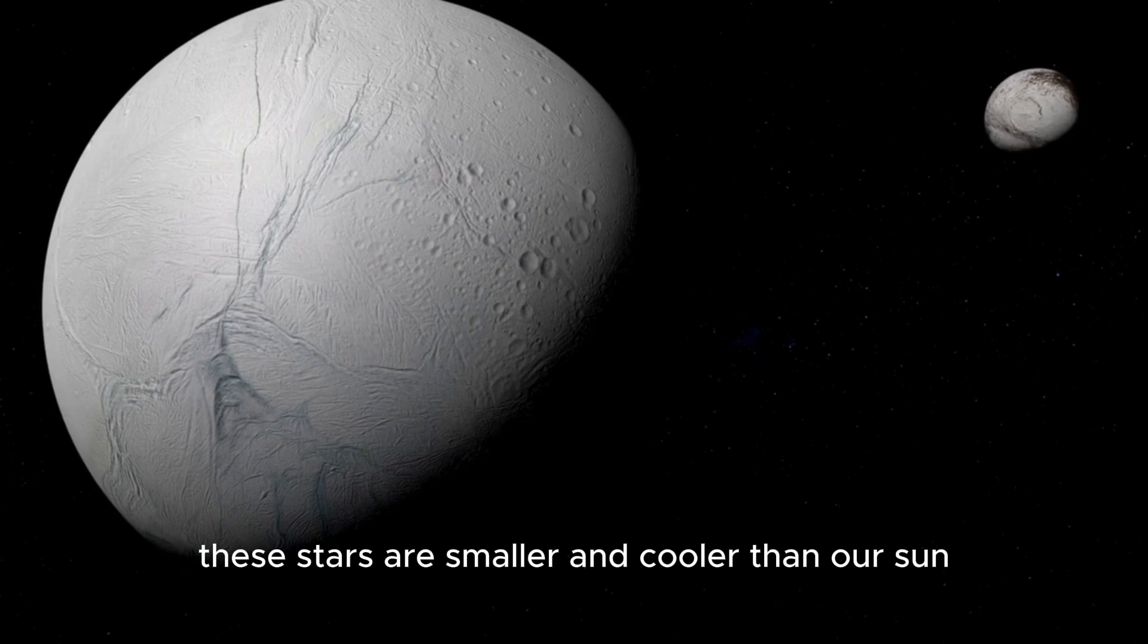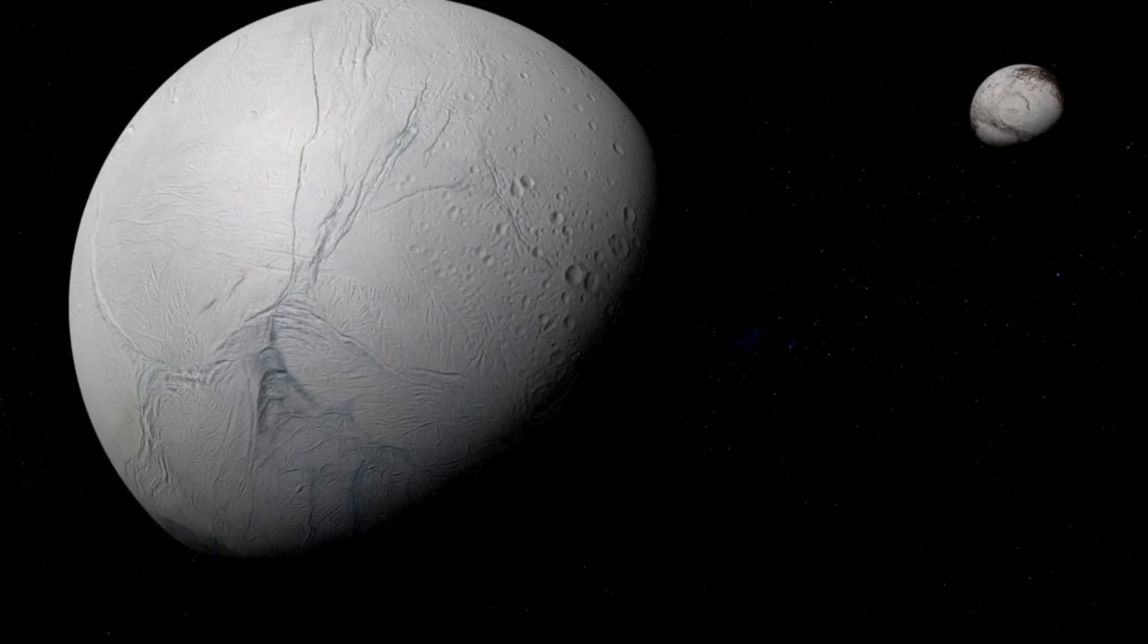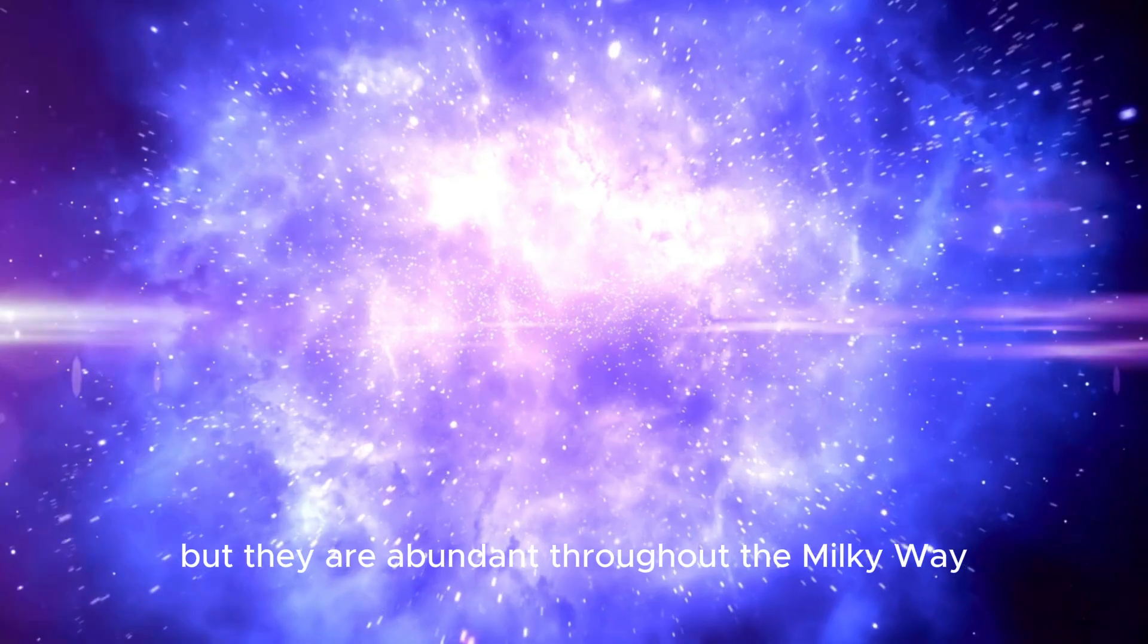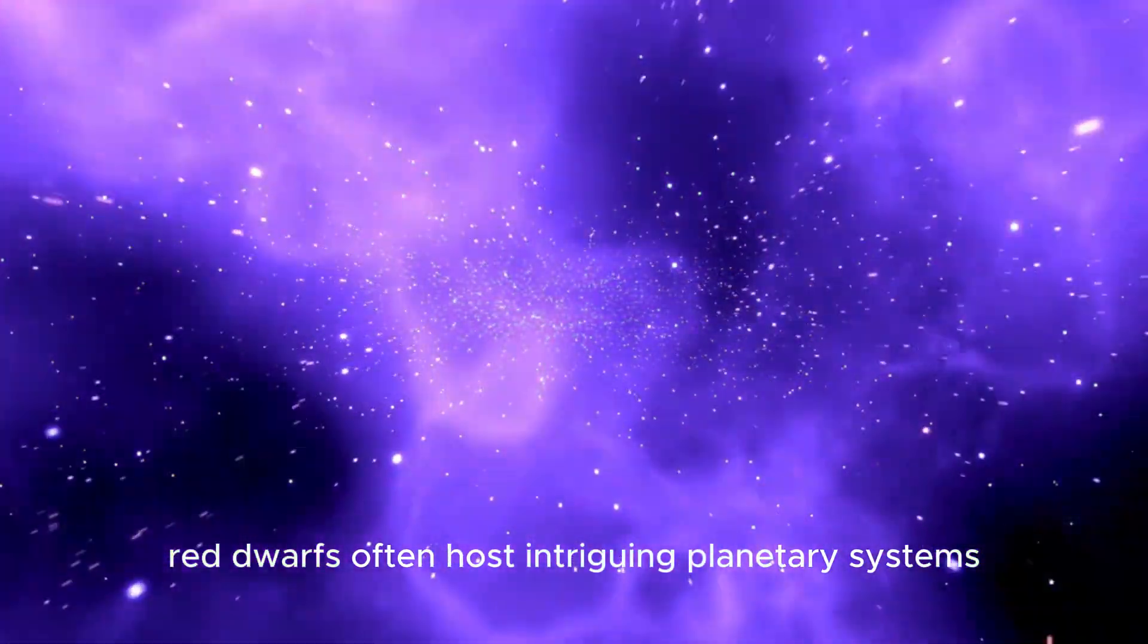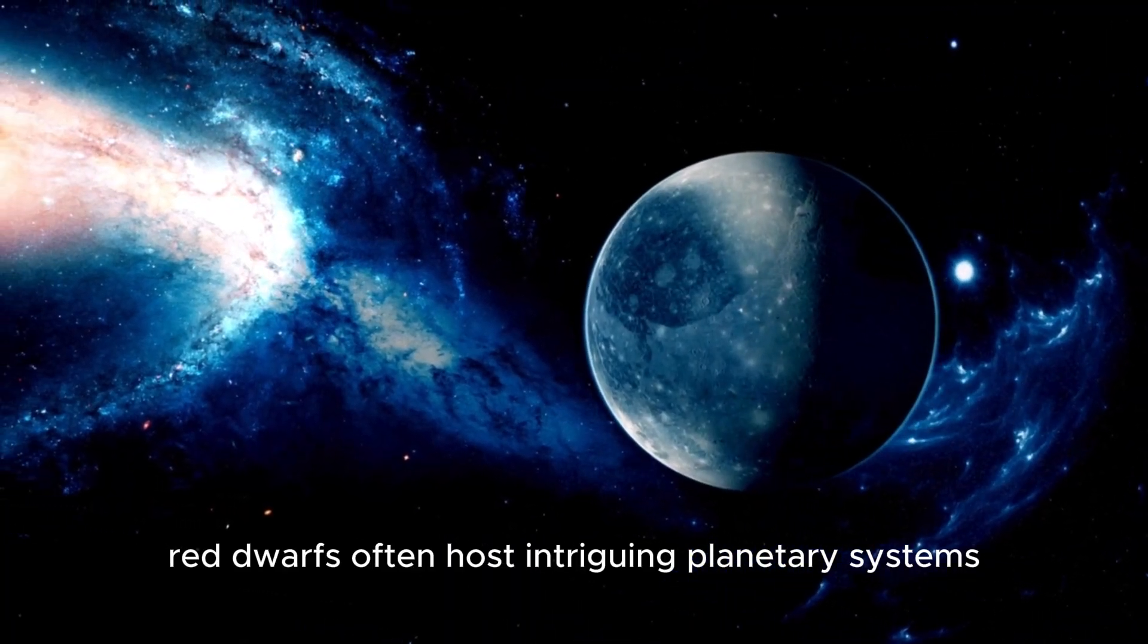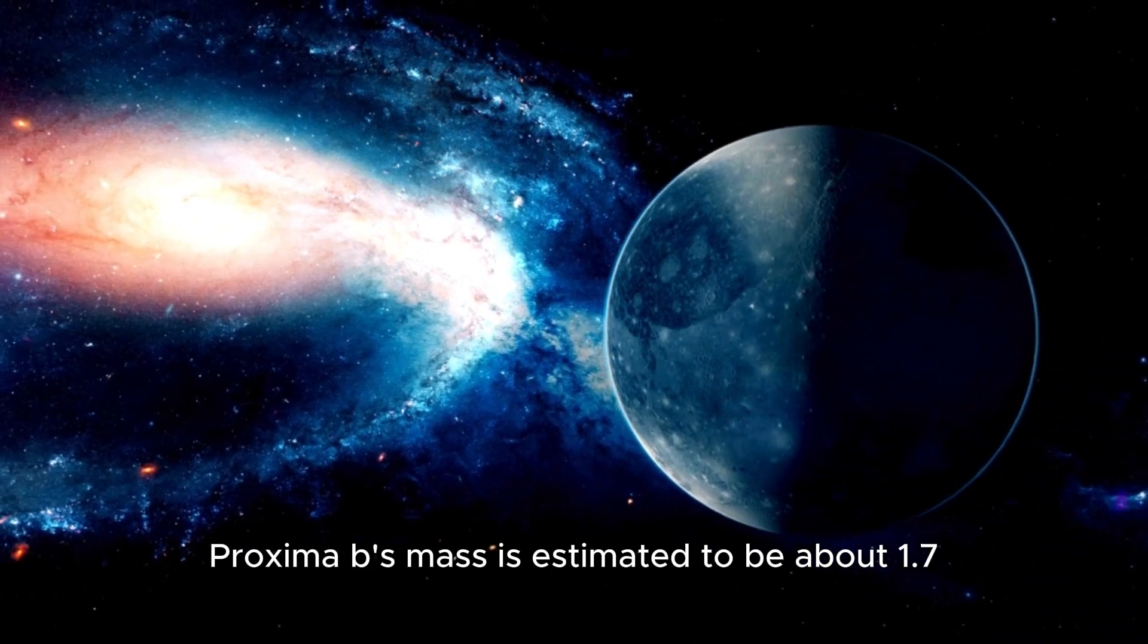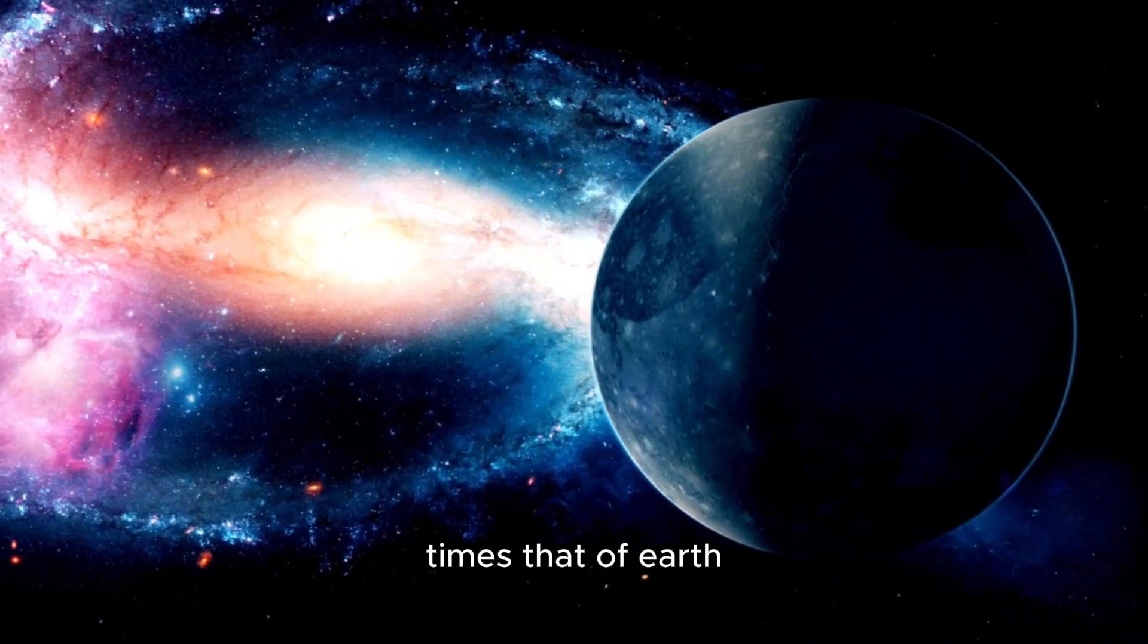These stars are smaller and cooler than our sun, but they are abundant throughout the Milky Way. Despite their dimness, red dwarfs often host intriguing planetary systems. Proxima b's mass is estimated to be about 1.7 times that of Earth.